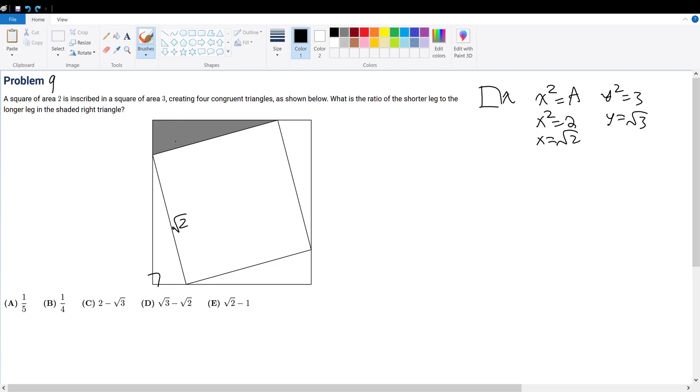But we know that all these areas are congruent, so let's call this A. If that's A, this is A, this is A, and this is also A. So what can we say? We know that the outer square must equal the inner square plus 4 times A, right?